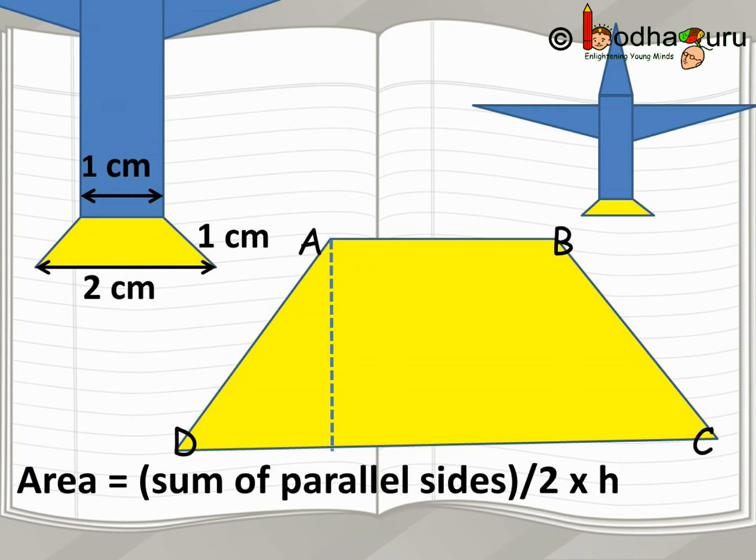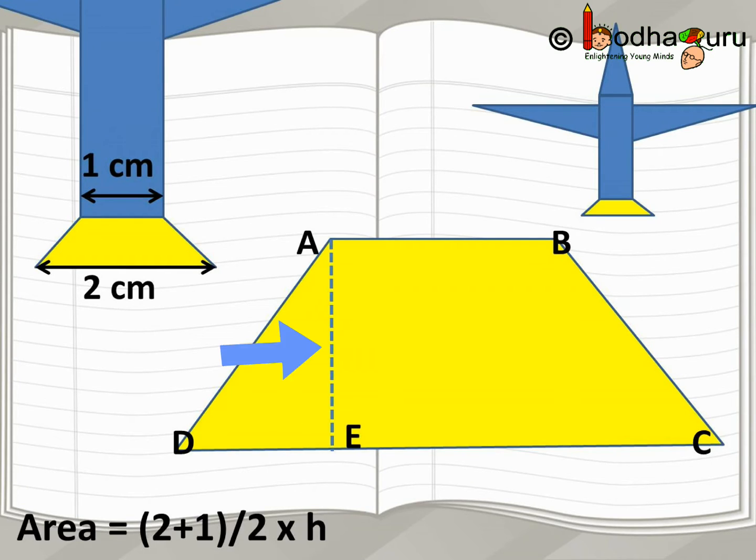But here, we don't know what the height is. How do we calculate it? Let's draw a perpendicular on CD from A. Now, AE is the height of the trapezium and triangle AED is the right triangle.